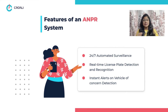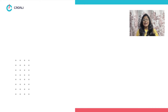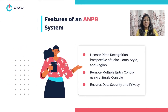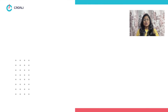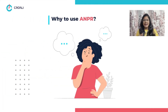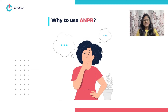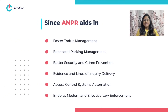Feature 4: license plate recognition irrespective of color, font style, and region. Feature 5: remote multiple entry control using a single console. Feature 6: ensures data security and privacy. Now, why should you add an ANPR system to your industry? Some reasons include: Number 1, faster traffic management. Number 2, enhanced parking management.